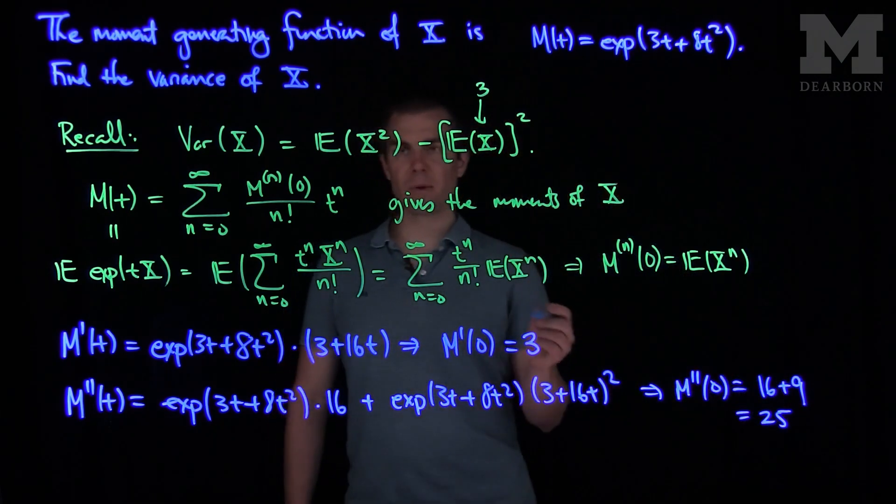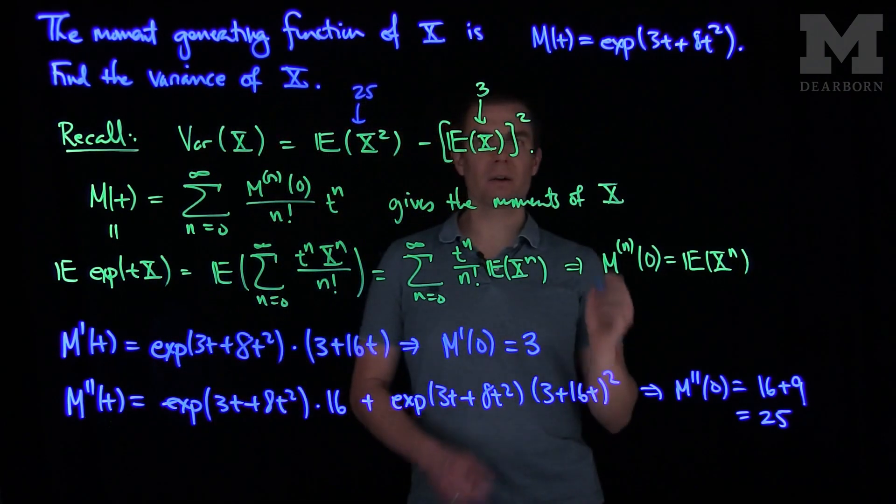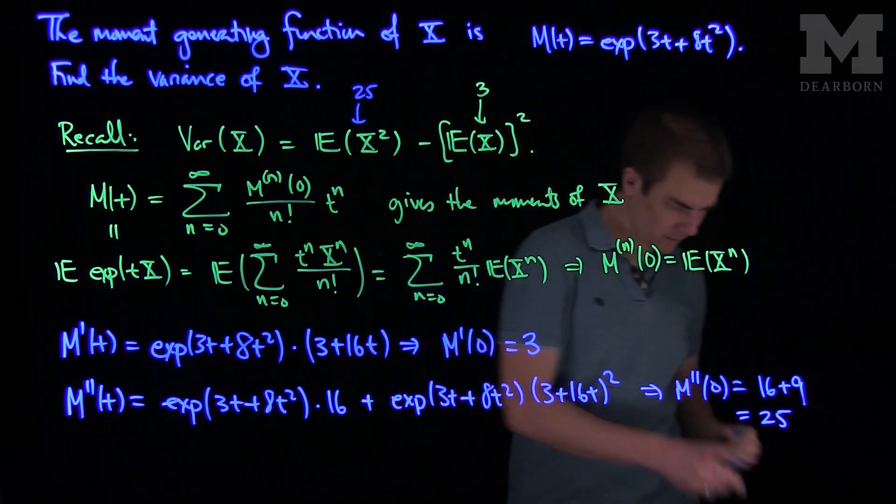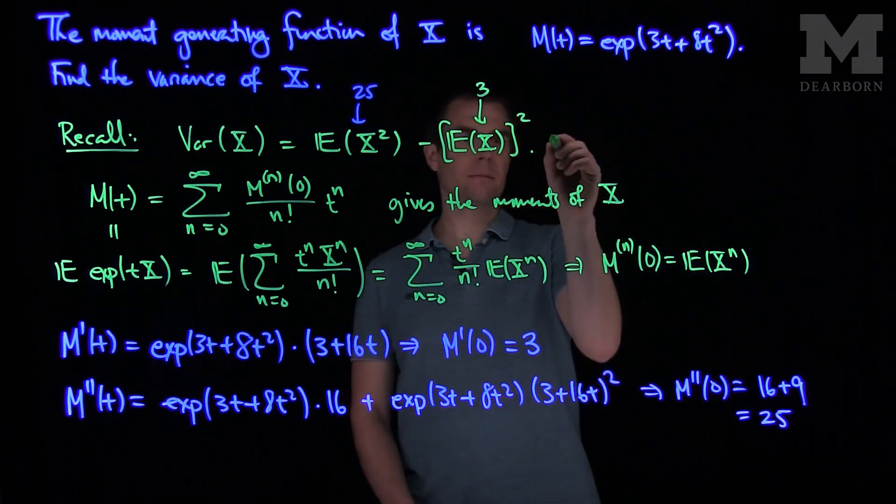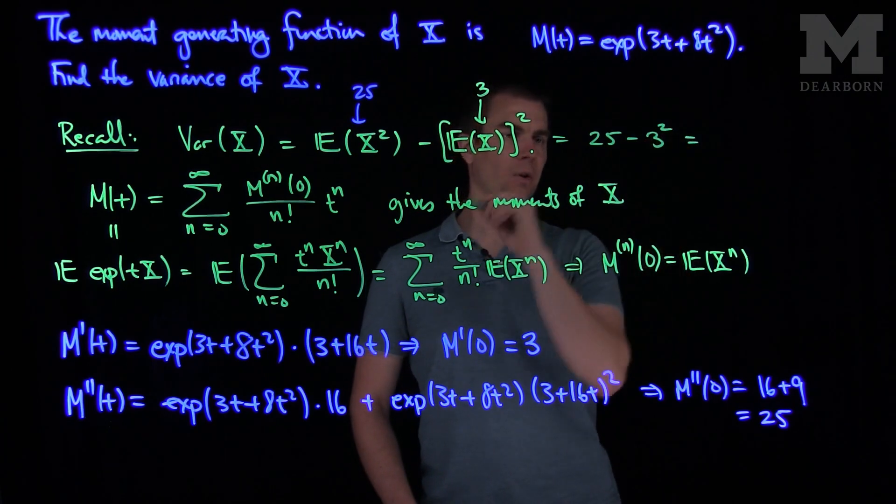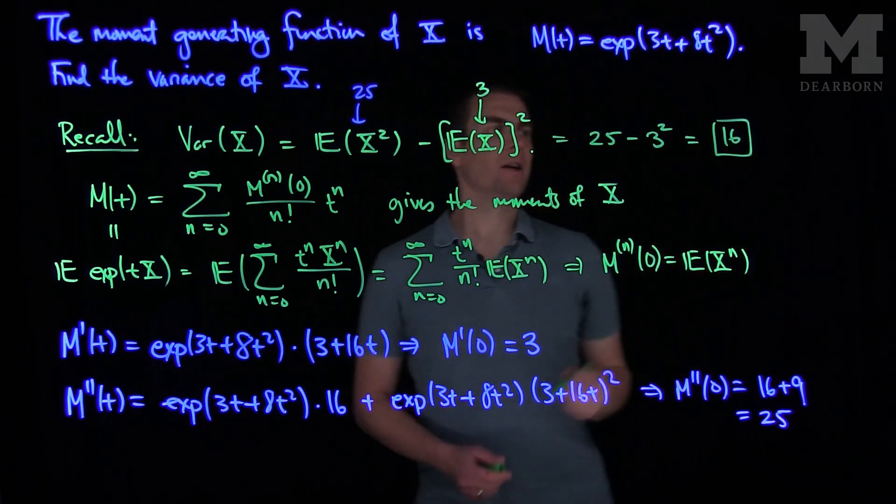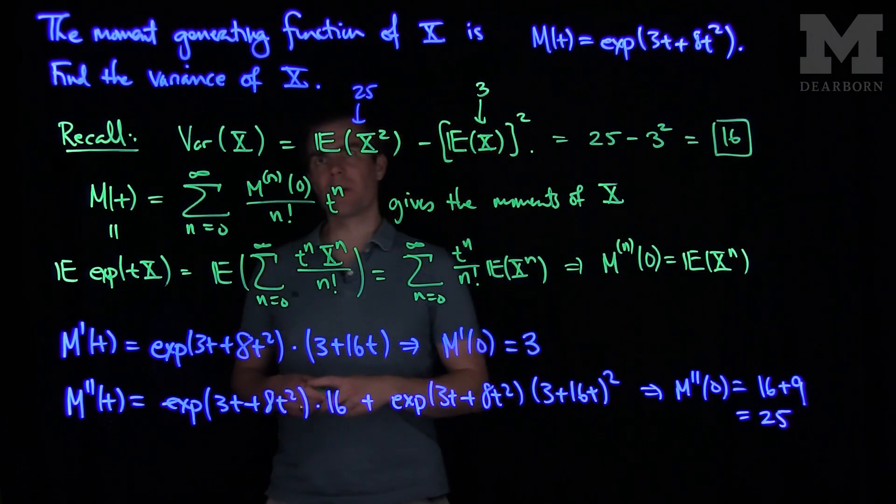So the second moment of X is 25. So our variance will be 25 minus 3 squared. That's 25 minus 9, and 25 minus 9 is 16. And that is the variance of this random variable X.